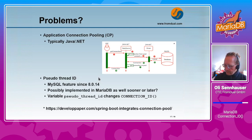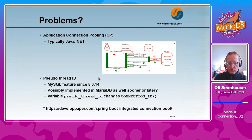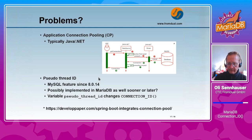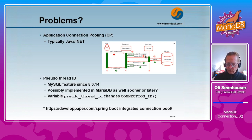What problems could we have with connection ID related to other technologies? If your application is using connection pooling — typically done by Java or .NET applications — then your connection is shared between different application threads. You have one thread in your application, you have your connection pool, the connection pool has a connection through your JDBC driver to the database, gets a result, and sends it back to the application.